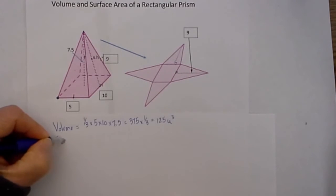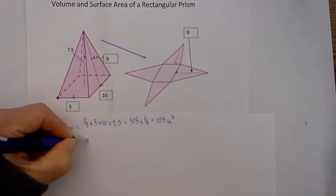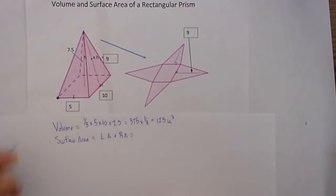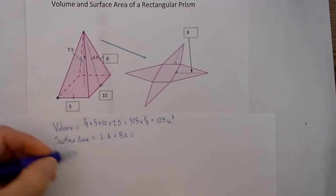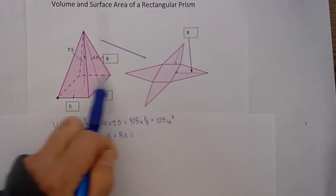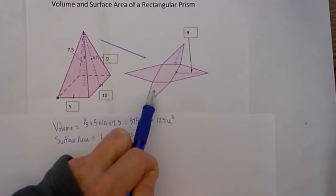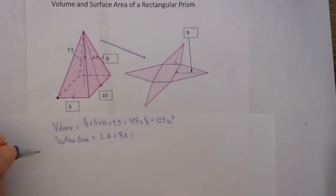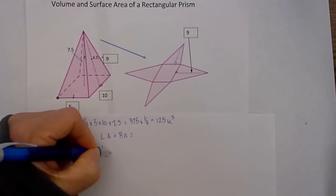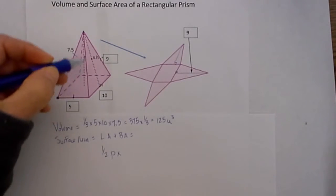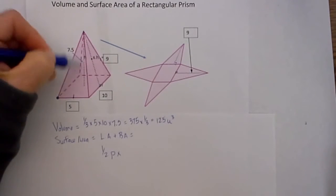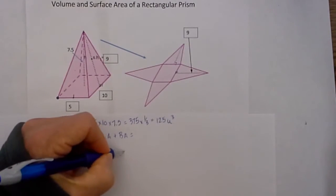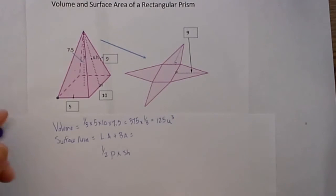Now the surface area is a little bit more involved — it is a two-step process. You take the lateral area and add that to the base area for the total surface area. To get the lateral area of a pyramid, you basically take the area of each triangular face. You can do that using the formula 1/2 times the perimeter times the slant height, which is the height of each individual triangular face, not the height of the pyramid.